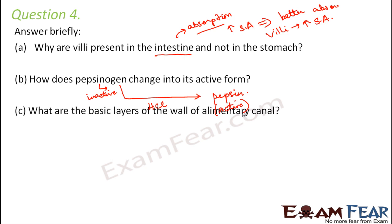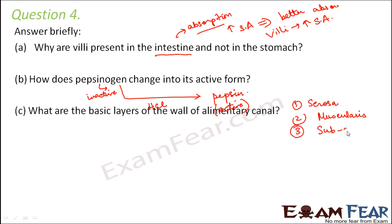What are the basic layers of the wall of the alimentary canal? There are four layers. The outermost is the serosa. The next is the muscularis, which has two layers of smooth muscle cells — the circular layer and the longitudinal layer. The third is the submucosa, and the innermost layer is the mucosa. This innermost layer has most of the glands that secrete enzymes, including the intestinal glands and gastric glands located in the mucosal epithelium.